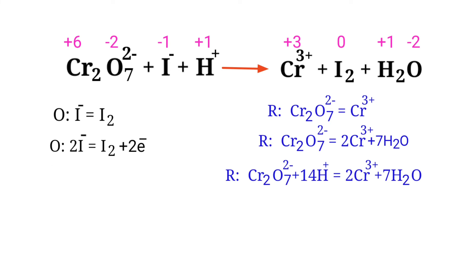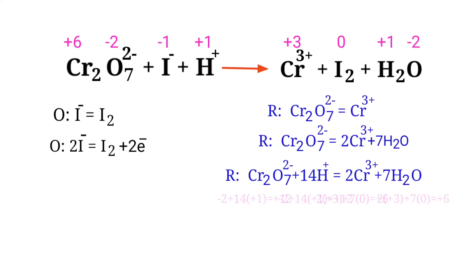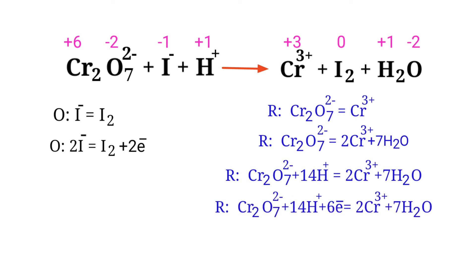Now you can equalize the charges in the reduction half reaction. Both sides are not equal, so you should add 6 electrons to the left side to make it equal to plus 6. Now the addition of charges are equal in the reduction half reaction.